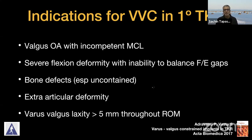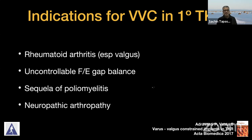The predominant indications for using a varus-valgus constraint in primary TKR would be: valgus osteoarthritis with an incompetent MCL, severe flexion deformity where you can't balance flexion-extension gaps, bone defects especially uncontained ones which compromise collaterals, extra-articular deformity in certain situations, and varus-valgus laxity more than five millimeters throughout the range of motion. Uncommon indications include rheumatoid arthritis especially in valgus, neuropathic arthropathy, poliomyelitis, or uncontrollable flexion-extension gap balance.